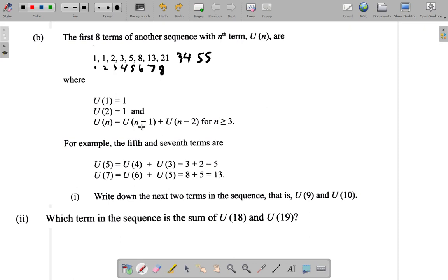Now look at this. U(18) and U(19), U(18) plus U(19). Well, it's a bigger number that you would write first.